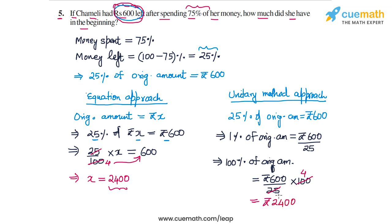The original amount is Rs. 2400. Let me recap the unitary method again. We say that 25% of the original amount is Rs. 600, hence 1% of the original amount is Rs. 600 by 25 and hence 100% of the original amount is Rs. 600 by 25 into 100 and this comes out to be Rs. 2400 again.